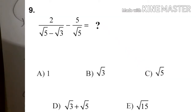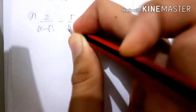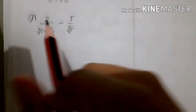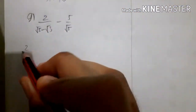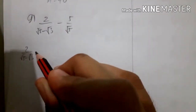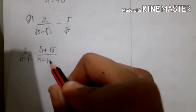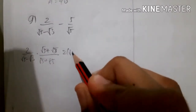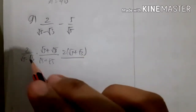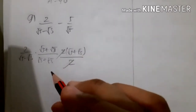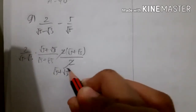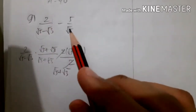For number 9 we have rationalization of roots: 2 over root 5 minus root 3, minus 5 over root 5. The key is to be aware of the roots and calculate one by one. The opposite sign means minus becomes plus, so we get 2 times the bracket, which is root 5 plus root 3, and we calculate the rationalization of this.